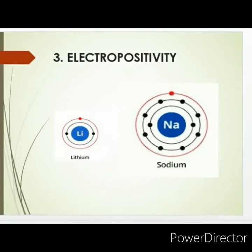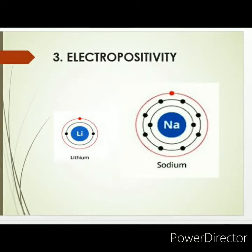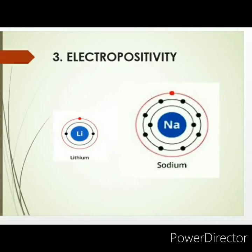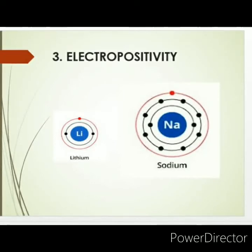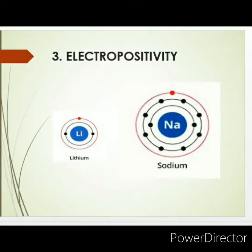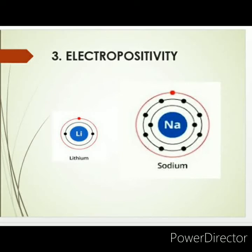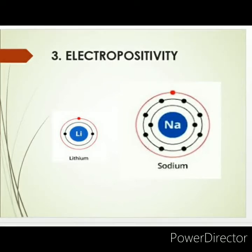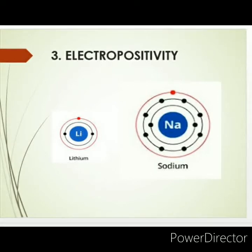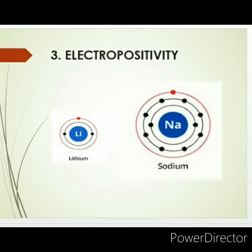In the case of sodium, the distance from the nucleus to the valence electron is higher compared to lithium, because the size of sodium is bigger. So, in which case will the attractive power of the nucleus on the valence electron be higher? Obviously in the case of lithium, because the size is smaller — lithium's nucleus can easily attract the outermost electron. But in sodium, the nucleus does not have as strong an attraction over the valence electron because the distance is higher.